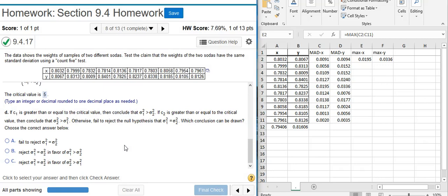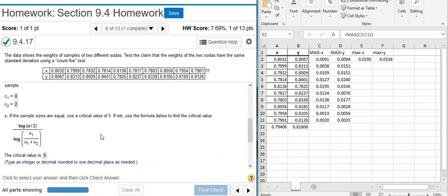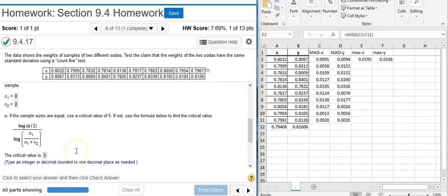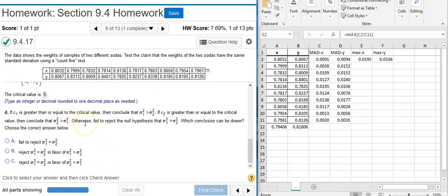Finally, Part D asks us to resolve the hypothesis test using the count 5 method. To do that, we compare our critical value with our test statistics. So the first one says, if C1 is greater than or equal to the critical value, then we make this conclusion. Well, if C1 is 0, the critical value is 5, 0 is not greater than 5, so we're not going to make this conclusion. If C2 is greater than or equal to the critical value, then make this conclusion. Well, C2 is 2, the critical value is 5, 2 is not greater than 5, so we're not making that conclusion. Then it says, otherwise, fail to reject the null hypothesis. Well, that's the conclusion we're going to make because none of our test statistics are greater than the critical value, so we fail to reject. Excellent!